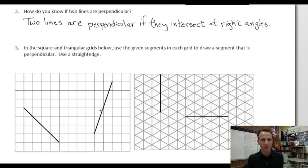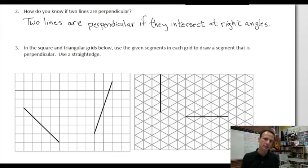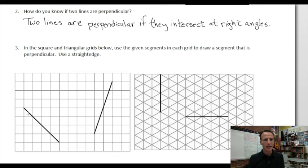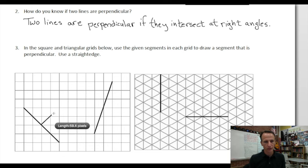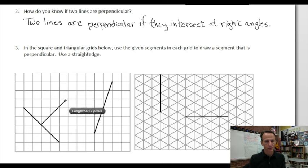Now we're going to use these segments to draw a segment that is perpendicular. Use a straight edge, which could be a ruler or just about anything. I could draw it anywhere along here — I could start at this end, this end, or in the middle, wherever I want. I'm going to start in the middle. As long as it's intersecting at right angles. If I connect at that point — boom, there we go.